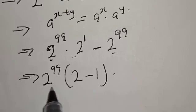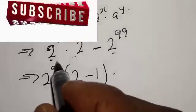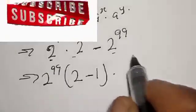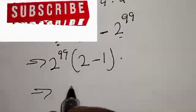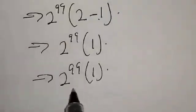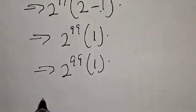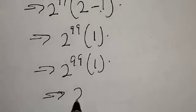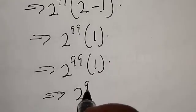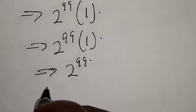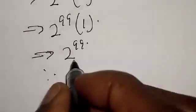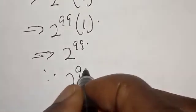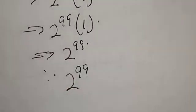If you open the bracket with 2 raised to power 99 you get back what is here. This simplifies to 2 raised to power 99 multiplied by 1, which equals 2 raised to power 99. Therefore our final answer is 2 raised to power 99.